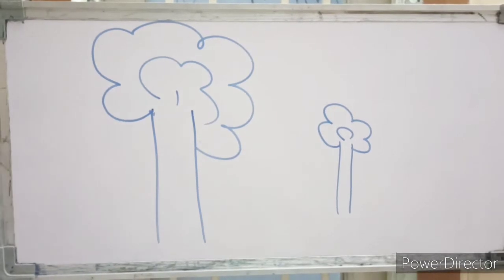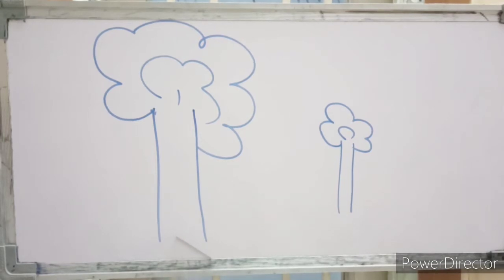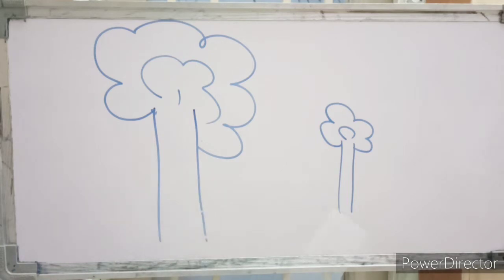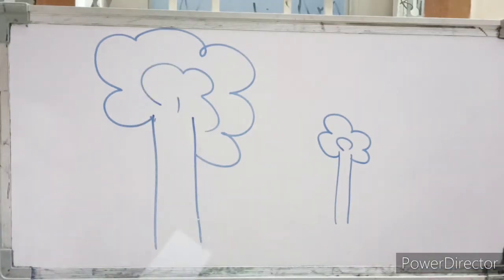Now kids, look at these two pictures. What are these? Trees! Yes, trees. How many trees are there? Two trees. This is one, this is two — so two trees are there. Which tree is bigger? The first one. Yes, you can see this is the bigger tree and this is the smaller tree.